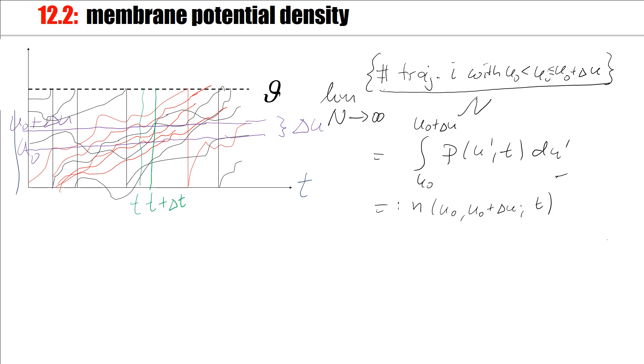And now we ask, how does this little symbol N, the fraction of neurons in that interval at time t change? So let me compare N of u0, u0 plus delta u at time t plus delta t with N of u0, u0 plus delta u, same interval, but at time t.